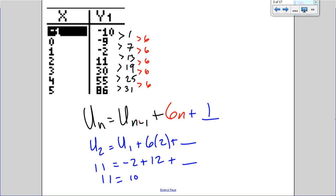I can check it to say u sub, let's do u sub 1 even. u sub 1 is u sub 0 plus 6 times 1, and see if it does add 1. So u sub 1 is negative 2. u sub 0 is negative 9 plus 6 plus 1. So negative 9 plus 6 gets to negative 3 plus 1 is negative 2.